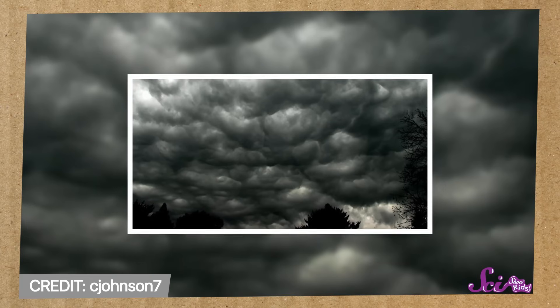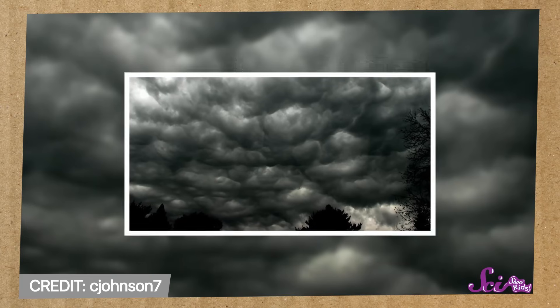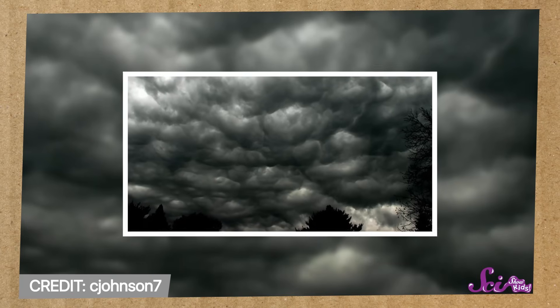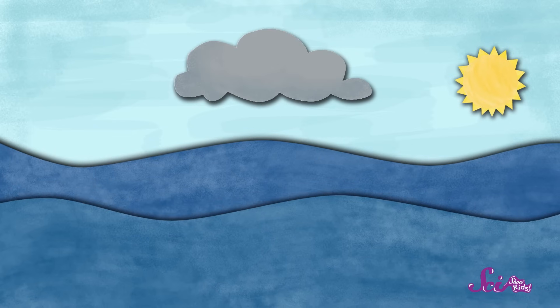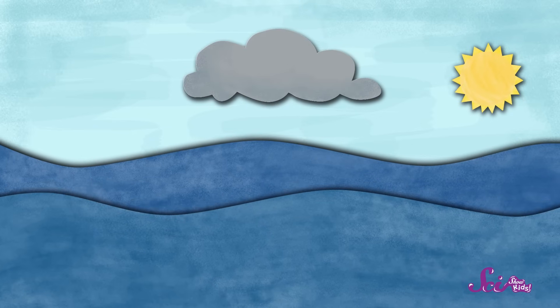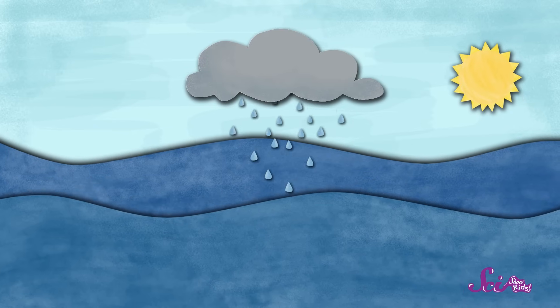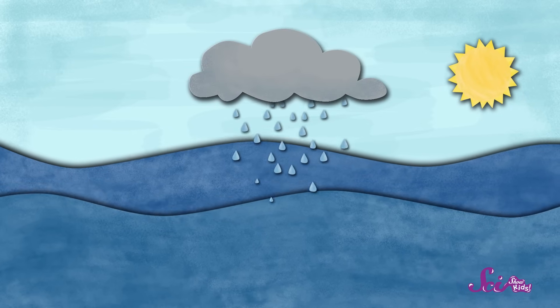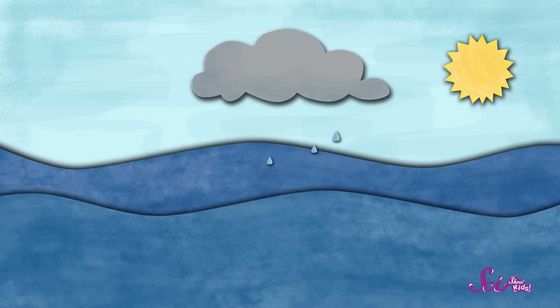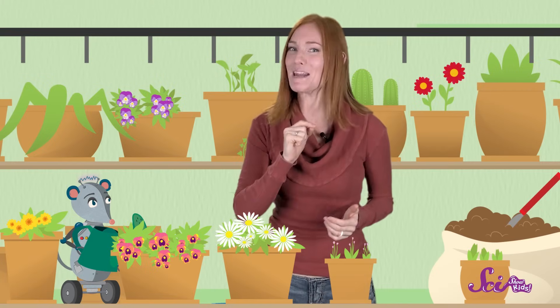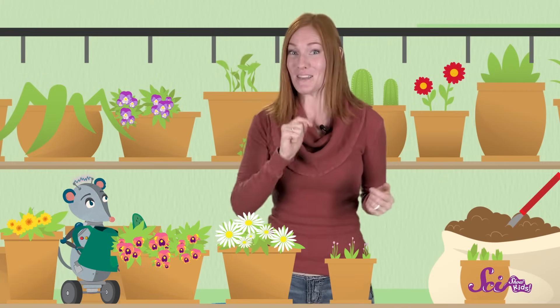When there's a lot of water in a cloud, the cloud starts to get darker. White fluffy clouds start to turn gray, and as the clouds get grayer, the water in them gets heavier. When the water gets too heavy, it falls right back out of the clouds as rain. And rain is where we started in the cycle – we made it all the way back to the beginning. Now the water cycle can start all over again.